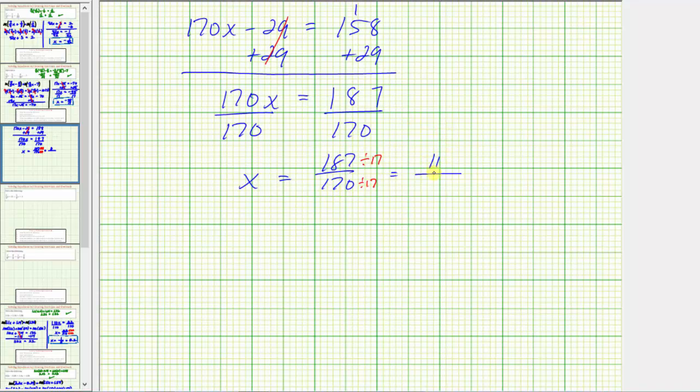170 divided by 17 is 10. So as a fraction, the solution is 11 tenths, which as a decimal would be equal to 1.1. 11 tenths is the same as 1 and 1 tenth, which is 1.1 as a decimal. Or if we needed to,